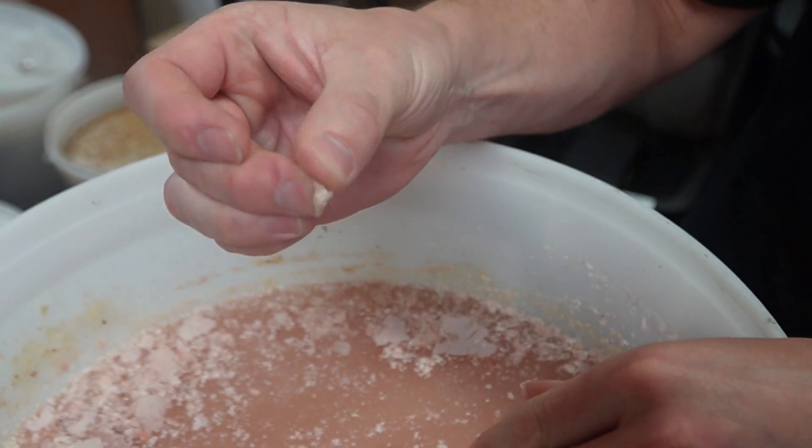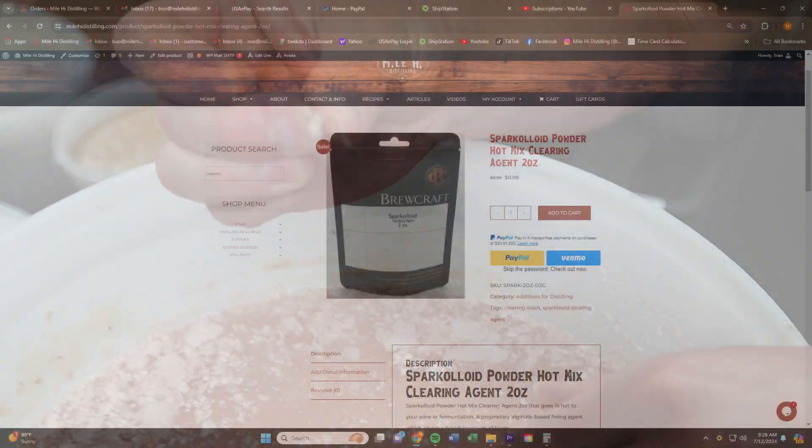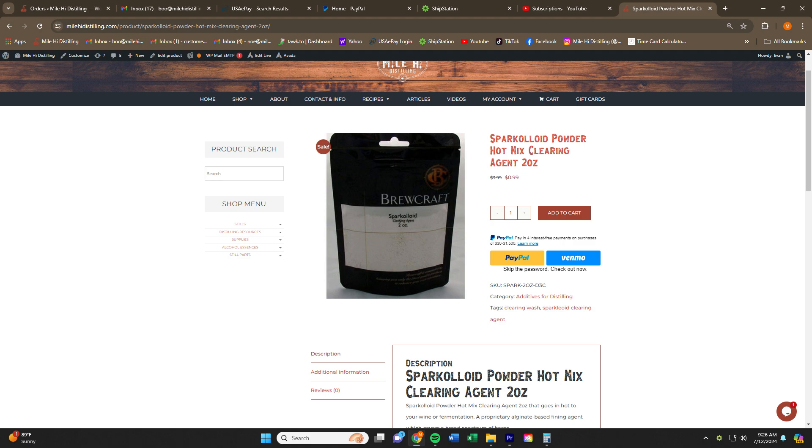The biggest perk of this agent is being cheap. It's currently on sale for 99 cents per packet. A packet will treat five to eight gallons of fermentation. I'd highly recommend you pick a few of these up. Costs you a dollar to try them out. What can go wrong there?